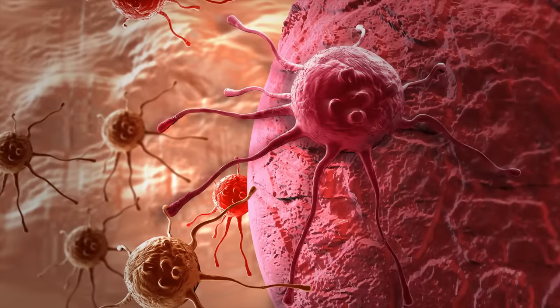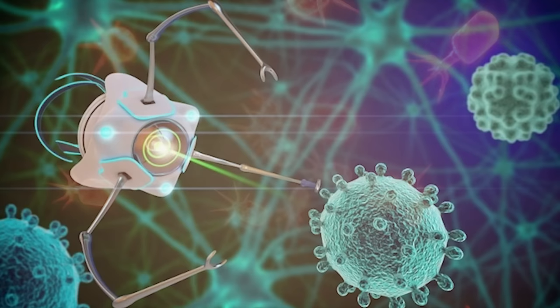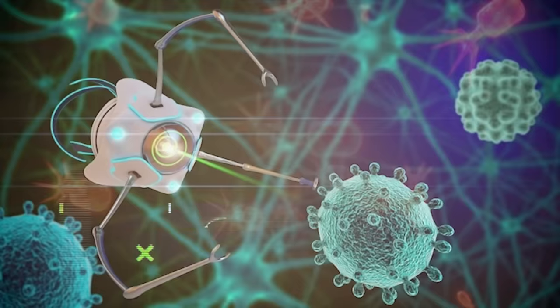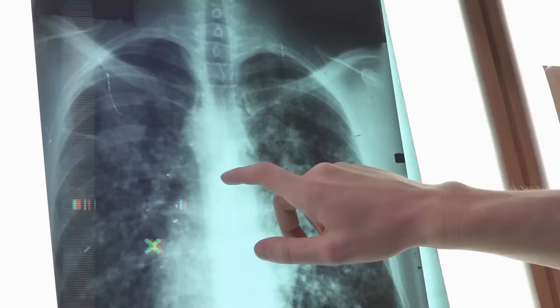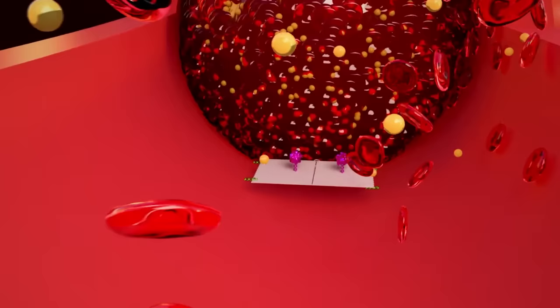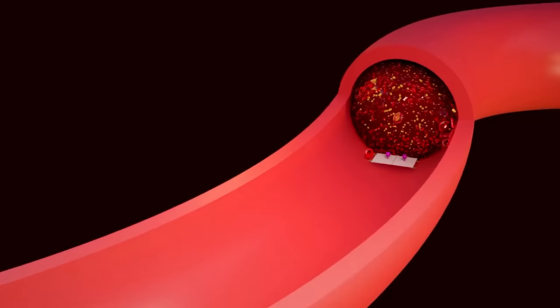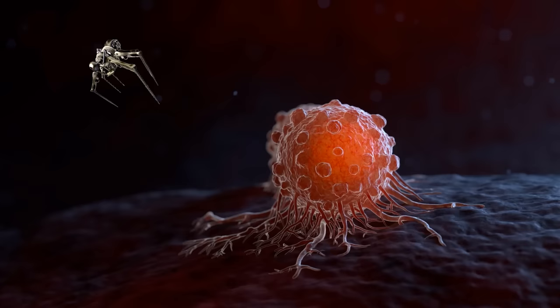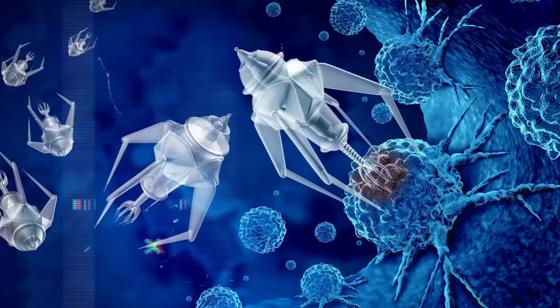For example, in the case of cancer, nanorobots can be programmed to detect specific tumor markers or genetic mutations that are associated with different types of cancer. They can be introduced into the body to search for these biomarkers and provide real-time information on their presence, location, and concentration. This information can aid in early cancer detection, allowing for timely and targeted treatment interventions.